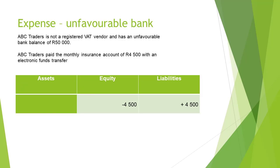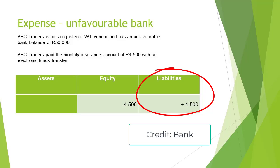If we now slightly change the example and say that the bank balance was unfavorable, then the bank account will now be classified as a liability because the business owes money to the bank. And by paying money out of the bank account, that liability will increase. Therefore, when bank is credited when it's a liability, we will see a plus 4,500 rand under liabilities because liabilities increase on the credit side.